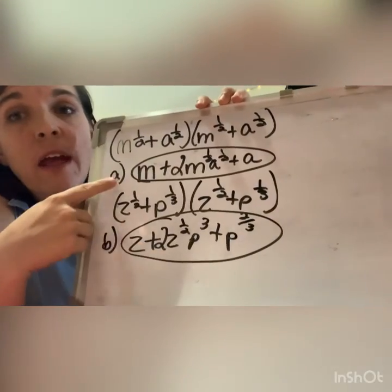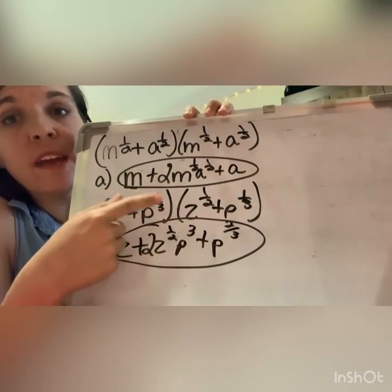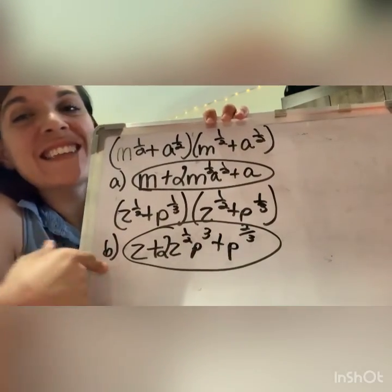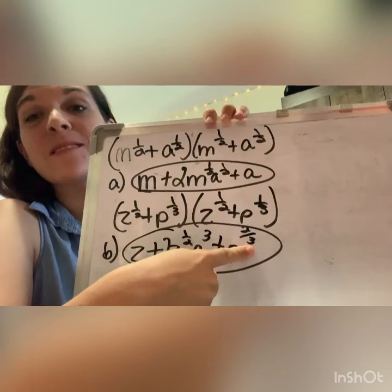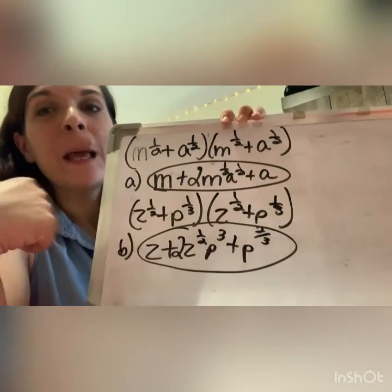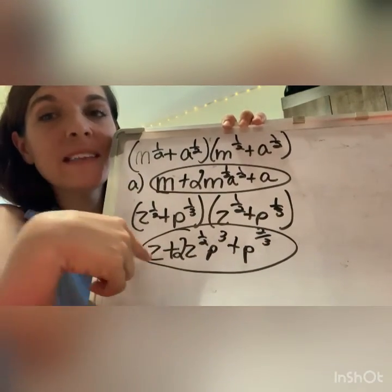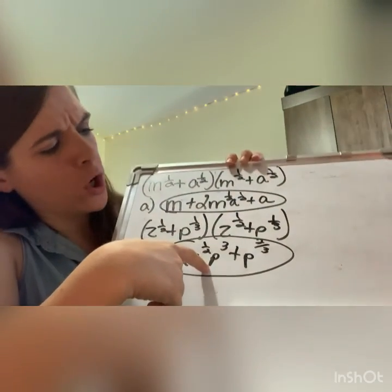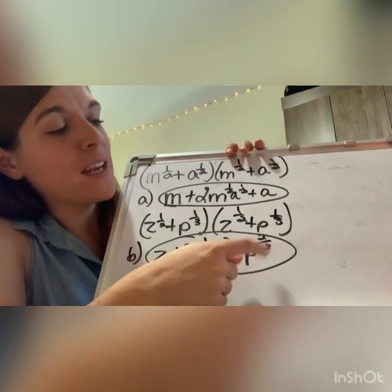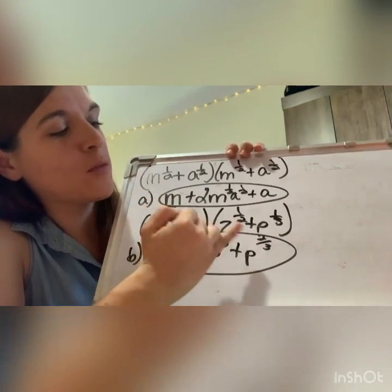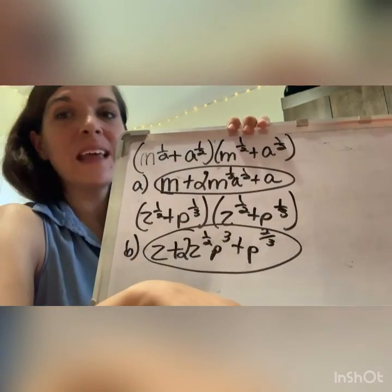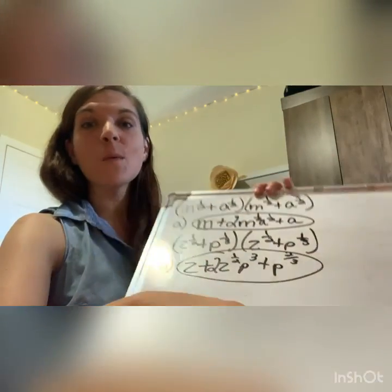On the practice: letter a is m plus two m to the one half a to the one half plus a. Then for letter b, when we multiply these together, we get z plus two z to the one half p to the one third, and then p to the two thirds — because one third plus one third is two thirds, not just one like when we do it with one half. That is your Lesson 108 and 109. If you have any questions, just let me know. Bye.